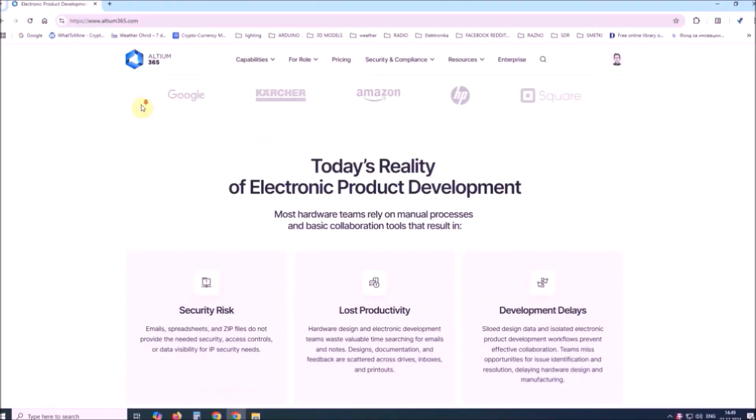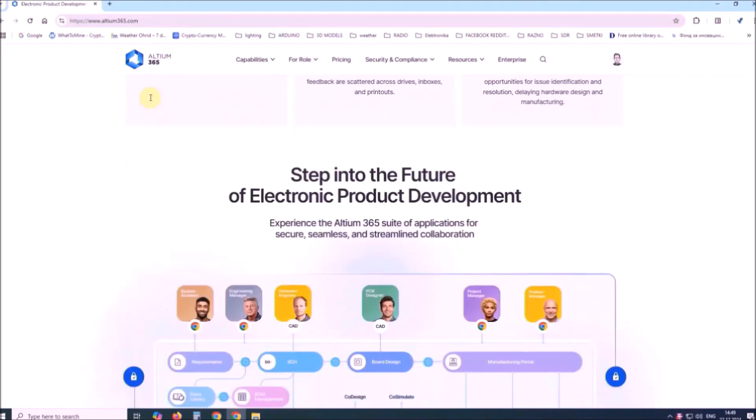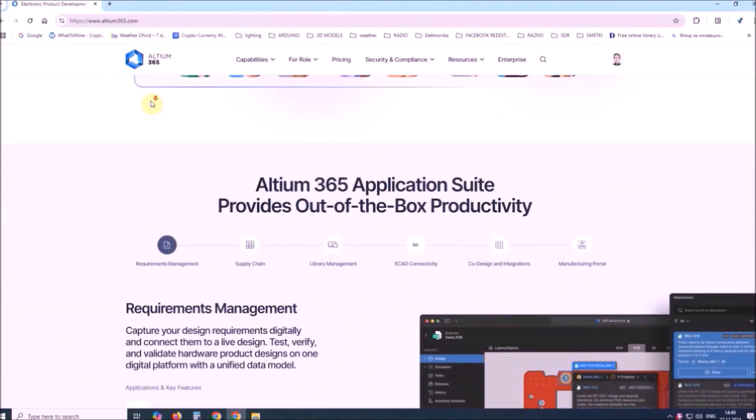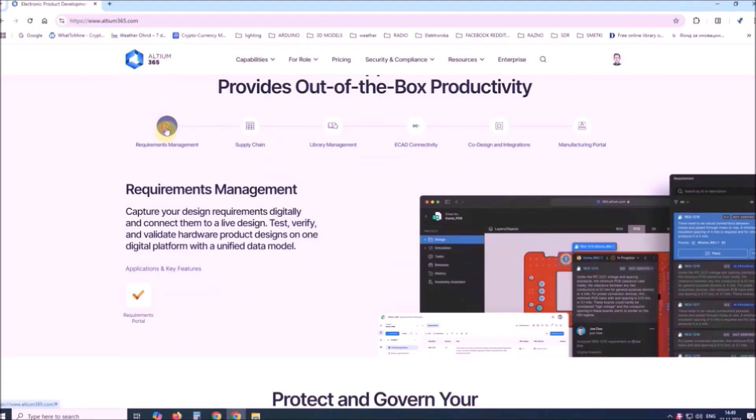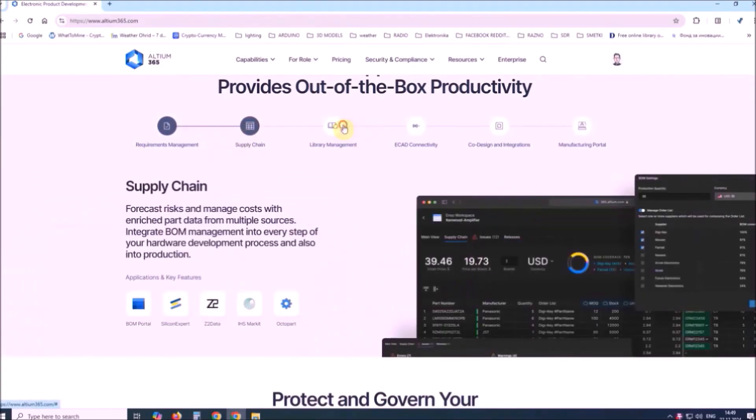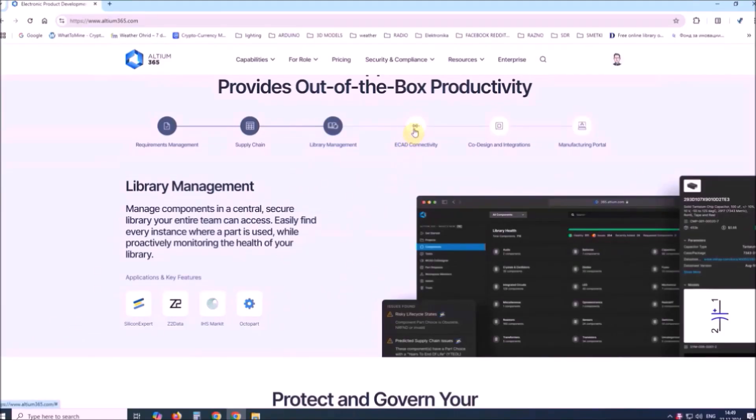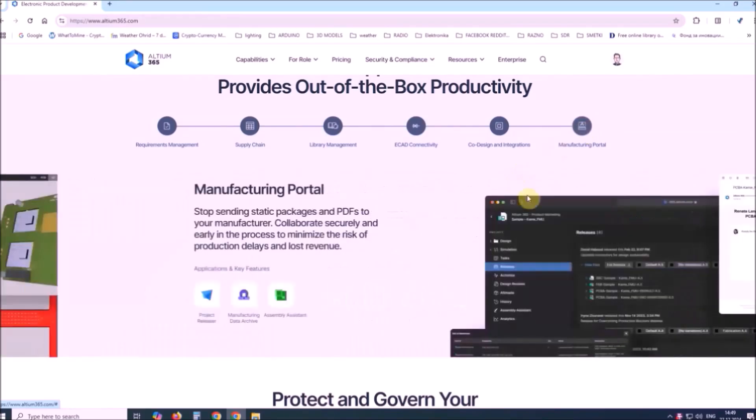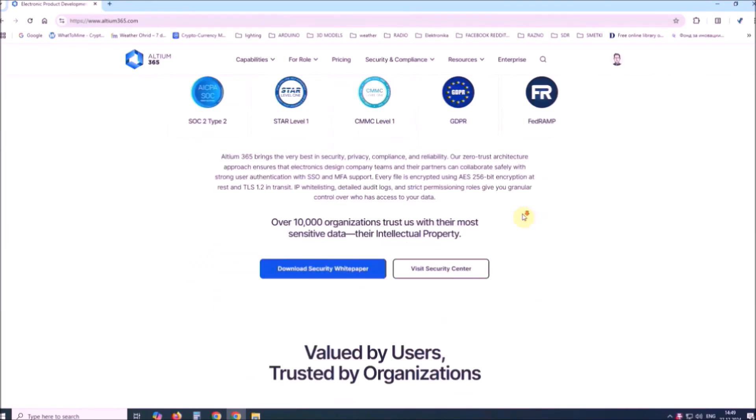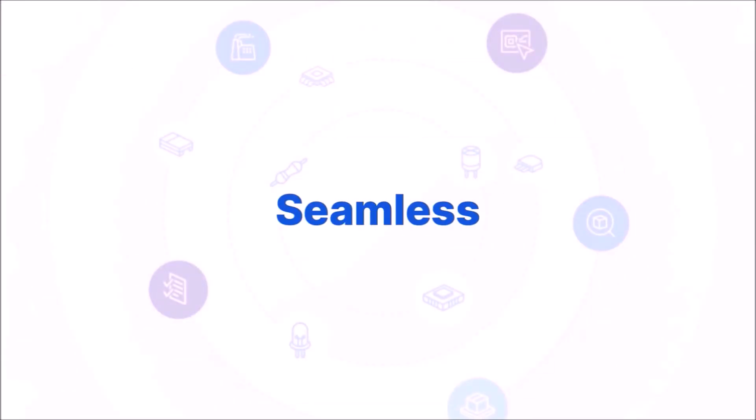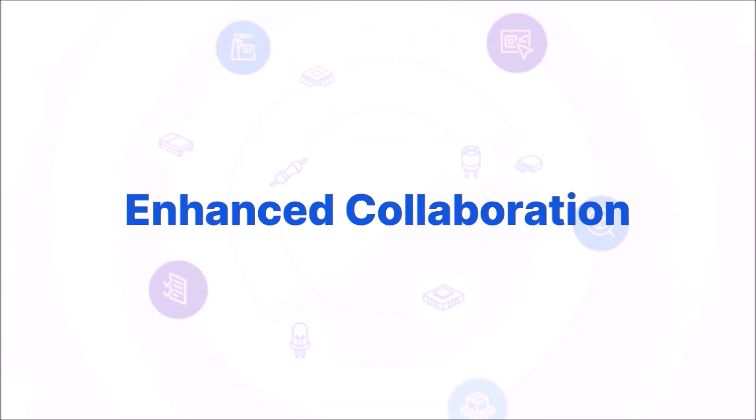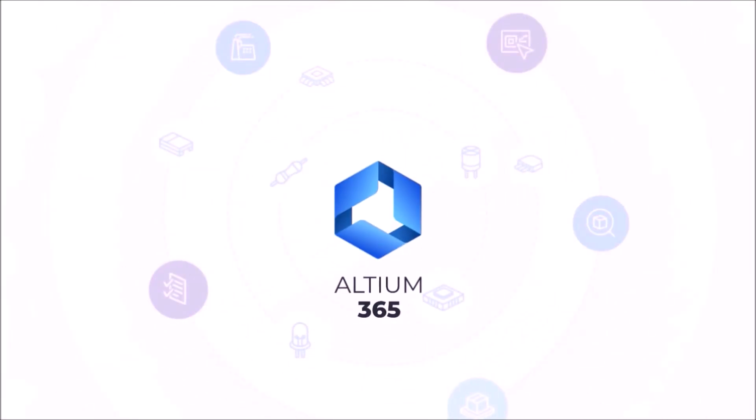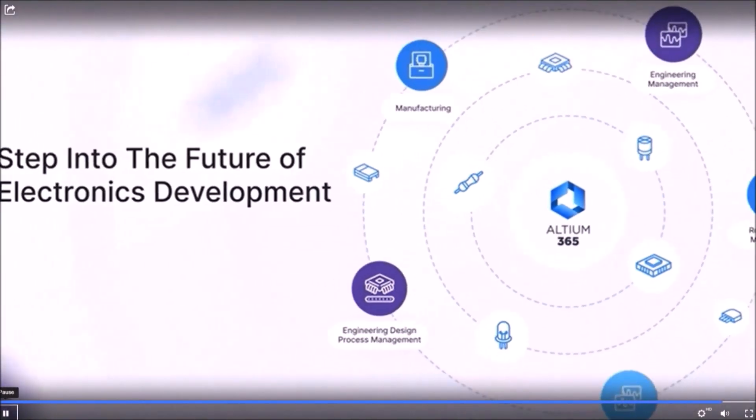Altium 365 is a cloud-based platform designed for electronics design and engineering. It provides a suite of tools for PCB design including equipment management, supply chain, library management, ECAD connectivity, co-design and integrations, and manufacturing portal. Accelerate your time to market with Altium 365 streamlined workflows, real-time collaboration tools and automated processes that reduce design iterations and rework. Explore Altium 365 and step into the future of electronic development.